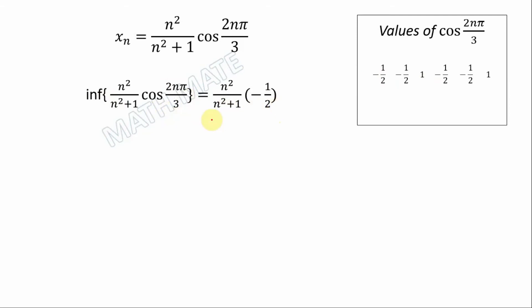We put negative 1/2 instead of cosine, and the lower limit equals the limit of the infimum of f(x_n). In this case, let's divide by n² on the top and bottom.